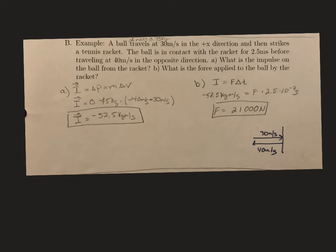That handles Part A — we found the impulse. Now we need to find the force that the racket applied to the ball. We can use the other half of the impulse-momentum theorem: impulse equals force times the change in time. We're given the contact time in the problem: 2.5 milliseconds. We divide by 1,000 to convert from milliseconds to seconds, giving us 2.5 times 10 to the minus 3 seconds. Taking our impulse from Part A and dividing by that time, we end up with a force of 21,000 newtons.